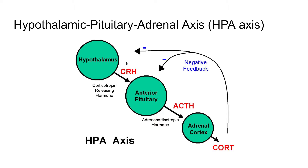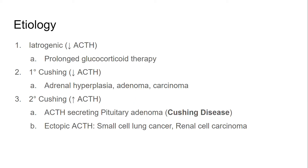This is a very important concept to understand when we talk about the etiology of Cushing syndrome. There are three main causes of Cushing syndrome: first is iatrogenic, second is primary Cushing syndrome, and third is secondary Cushing syndrome.